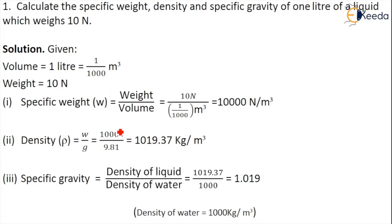So what is specific weight from the previous calculation? We got 10,000 by 9.81. So 10,000 by 9.81 equals 1019.37 kg per meter cube.